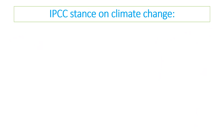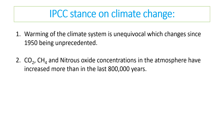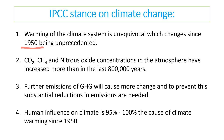The official IPCC stance is that the warming of the climate system is unequivocal, and changes since 1950 have been unprecedented. Carbon dioxide, methane, and nitrogen oxide concentrations have increased more than at any point in the last 800,000 years since 1950. Further emissions will cause more change, and to prevent this we should have substantial reductions in greenhouse gas emissions. Human influence is 95 to 100% likely to be the cause of climate change since 1950.